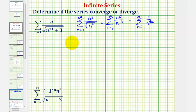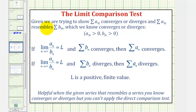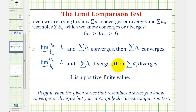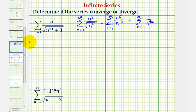For a quick review of the limit comparison test: since our series, the summation of a sub n, resembles the summation of b sub n, which we know diverges — if the limit of a sub n divided by b sub n equals L, where L is positive and finite, then since the summation of b sub n diverges, so does the summation of a sub n. So we'll be trying to show this series diverges by the limit comparison test.